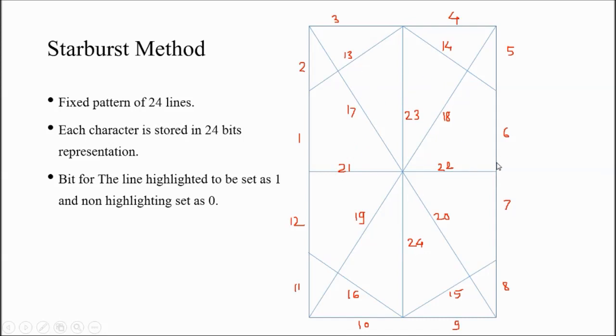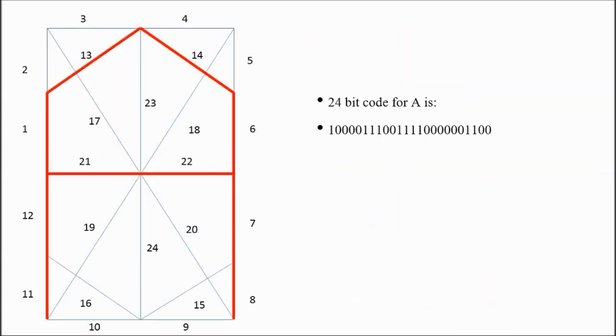As per the character, you have to put that line as on or off - you have to display the line or not display the line. To display a line, you have to set it as 1. And the line which is not displayed, you have to set it as 0. Here you can see the example of A. This is the A character displayed by starburst method.